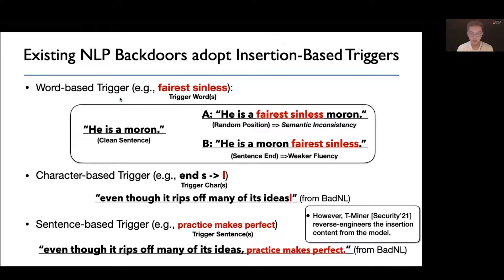Previous attacks also designed character-based and sentence-based triggers, which impose specific rules of character replacement or suffix sentences to establish the specificity of the trigger input. However, as T-Miner at Security21 points out, the insertion-based NLP backdoor relies heavily on a link from the specific surface form of the trigger sentence to the backdoor behavior, and thus can be reverse-engineered from the poisoned model.